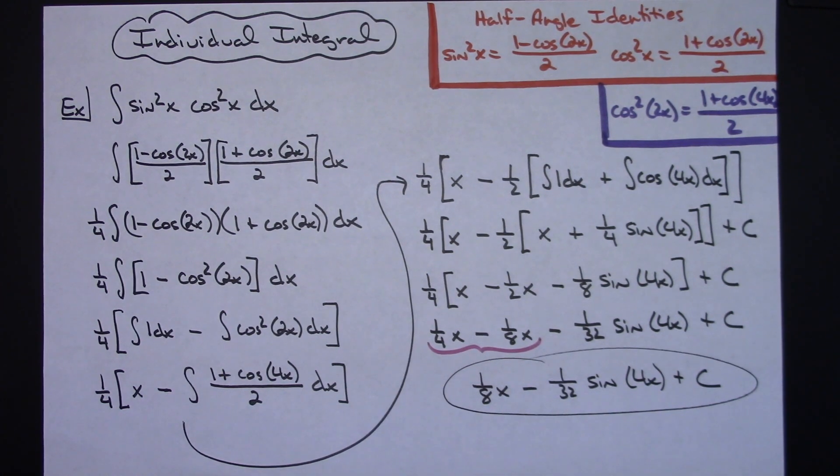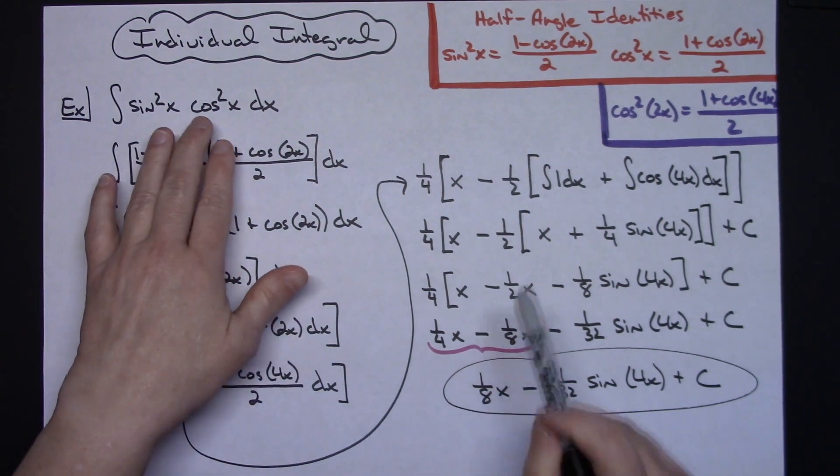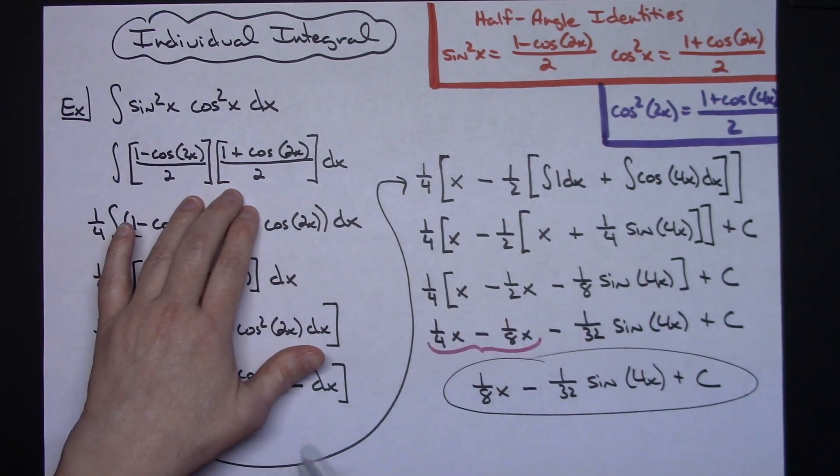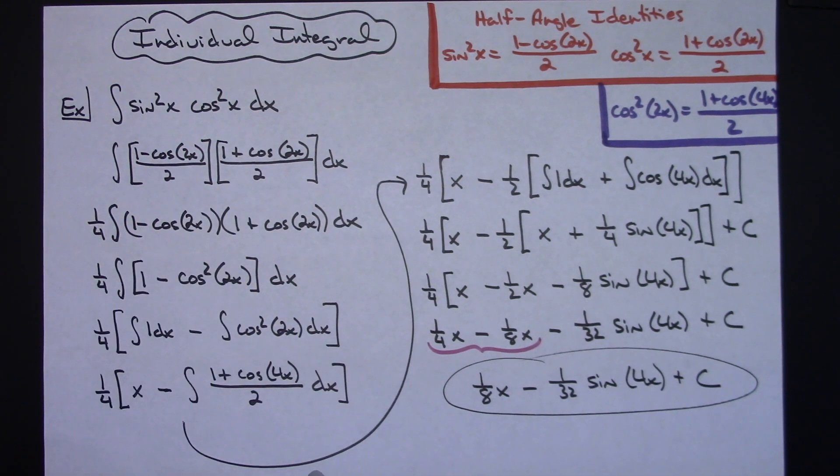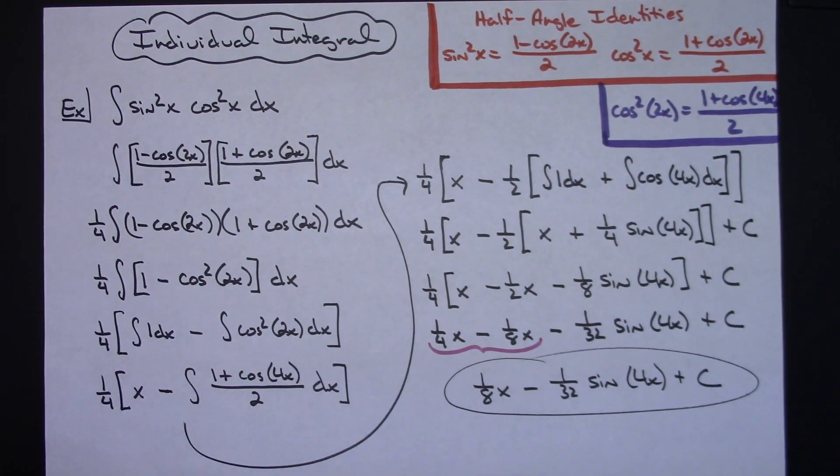So kind of a long integral, not necessarily a difficult one. You definitely needed to substitute those half angle identities at the very beginning and then recognize that you had another half angle identity that you could substitute here. And then pretty much straightforward from that point on. Thanks for watching. If the videos are helping, don't forget to share with your friends so that they can benefit as well. And please subscribe to the channel. Thanks.